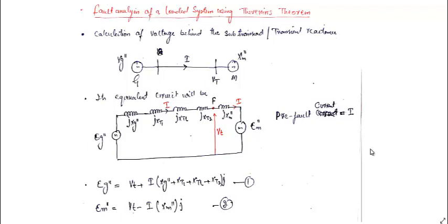Assalamu alaikum, hope everyone is good. In the last lecture we discussed how we use the per unit system to calculate the three phase short circuit current. In this case we are again using the per unit system, but will not be using the conventional method. We will use the Thevenin theorem to calculate the three phase short circuit current, doing fault analysis of a loaded system using Thevenin theorem.